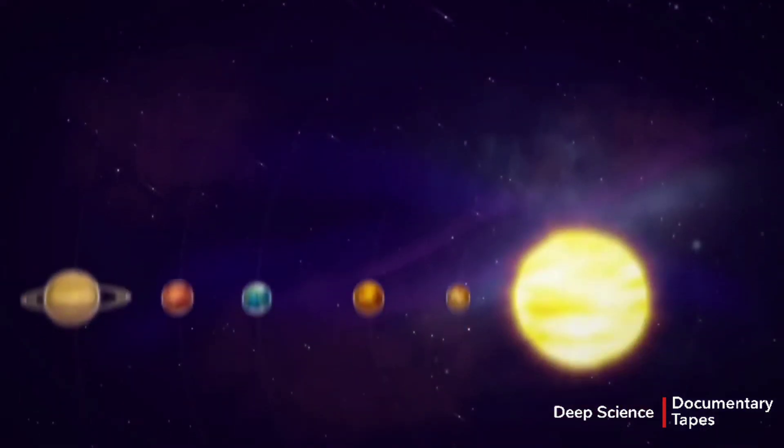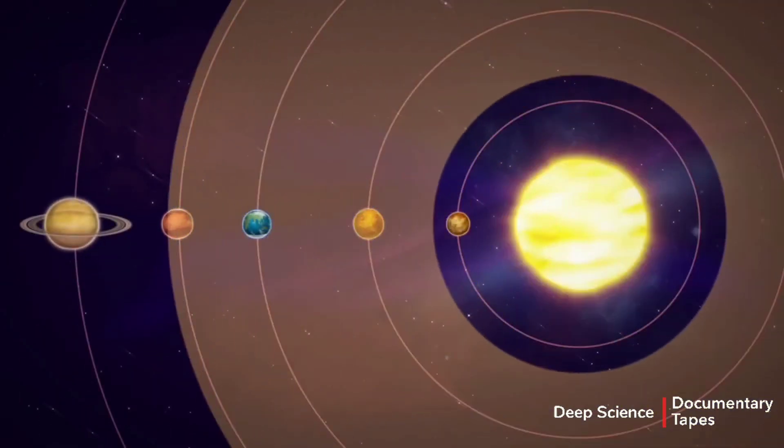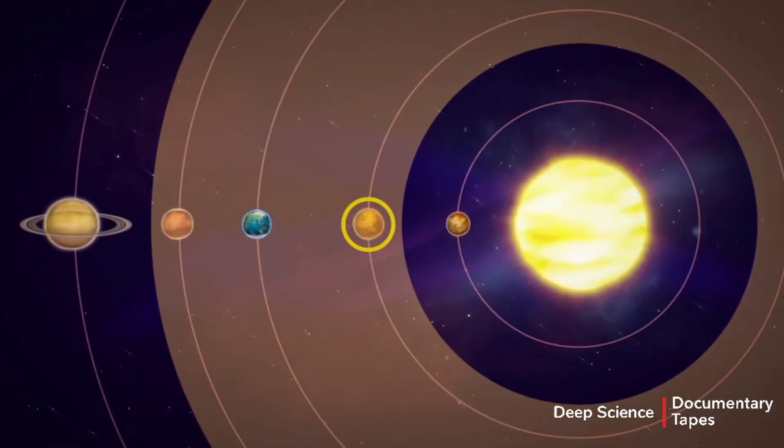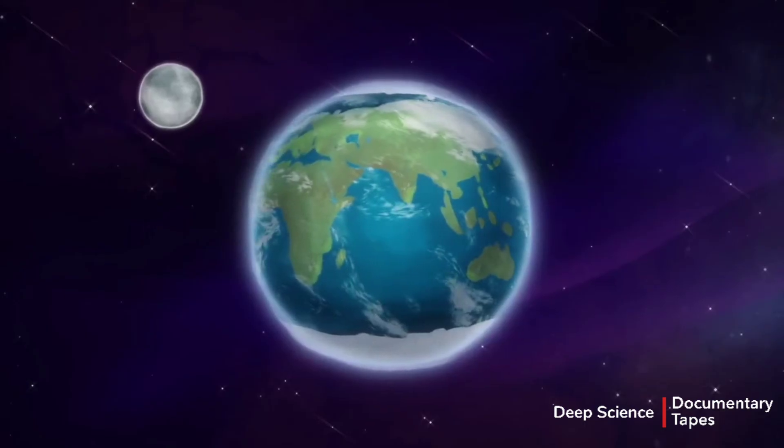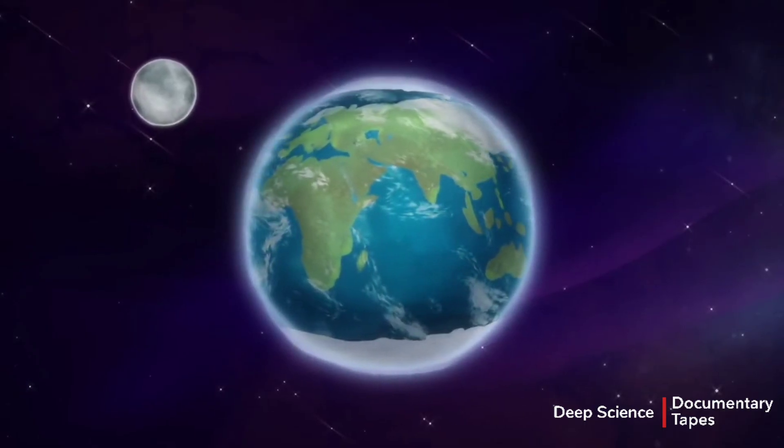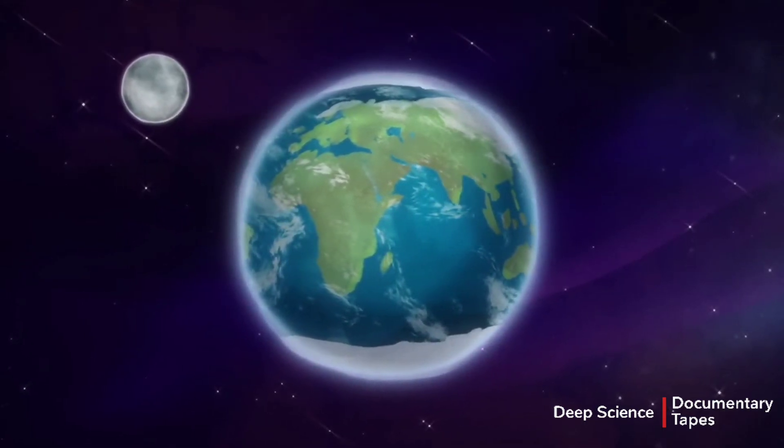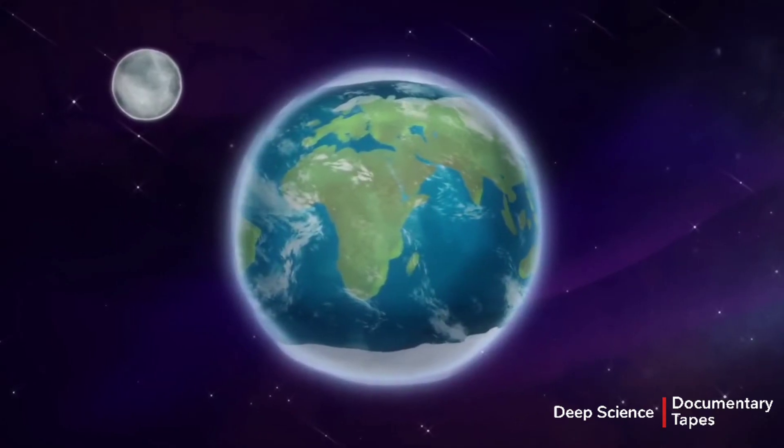In our solar system, the habitable zone extends from around the orbit of Venus to around the orbit of Mars. Earth happens to be nice and comfy in the middle, but it takes more than just a good location. Orbiting in the habitable zone does not guarantee a planet will be habitable.